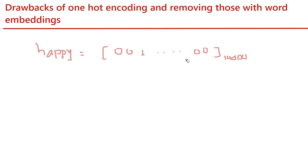There are a few problems with one-hot encoding. First, it is a binary vector — only zeros and ones are present. So if we perform any vector operation like multiplication, we are going to get zero, which is of no use. Second, it is sparse: most of the elements are zero and only one is present at one particular index. Also, the dimension of this vector is very high, so it is bulky in size.